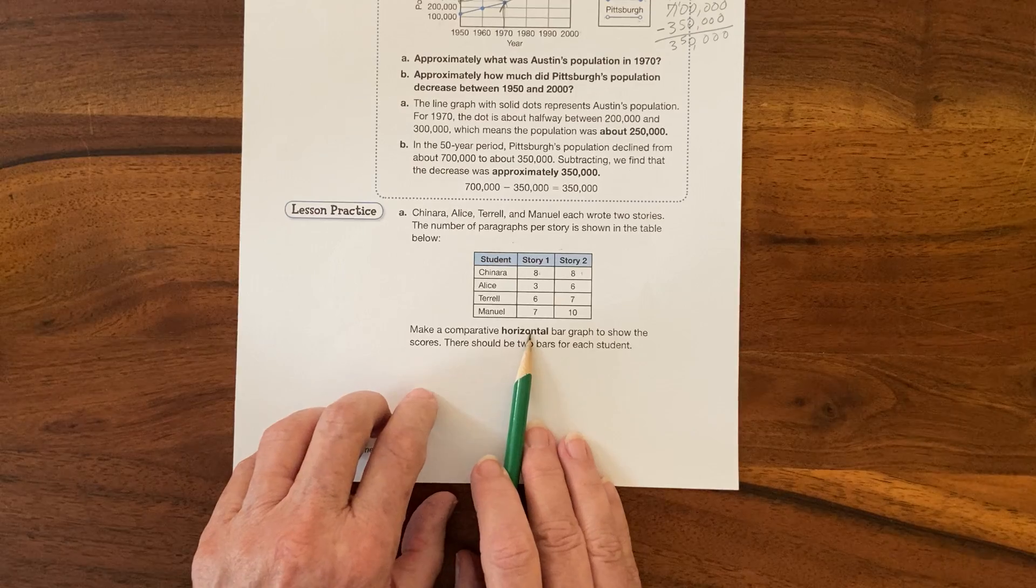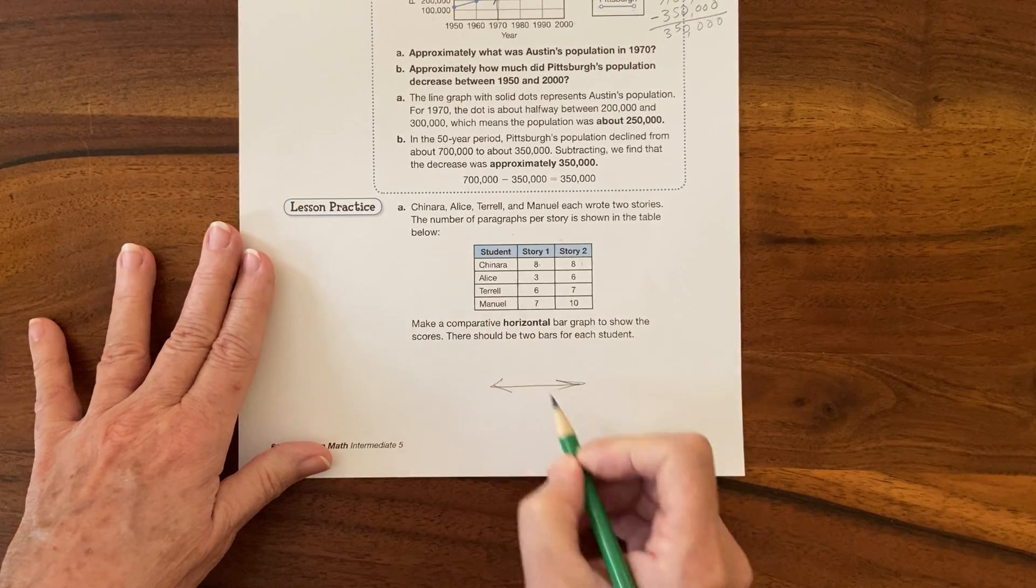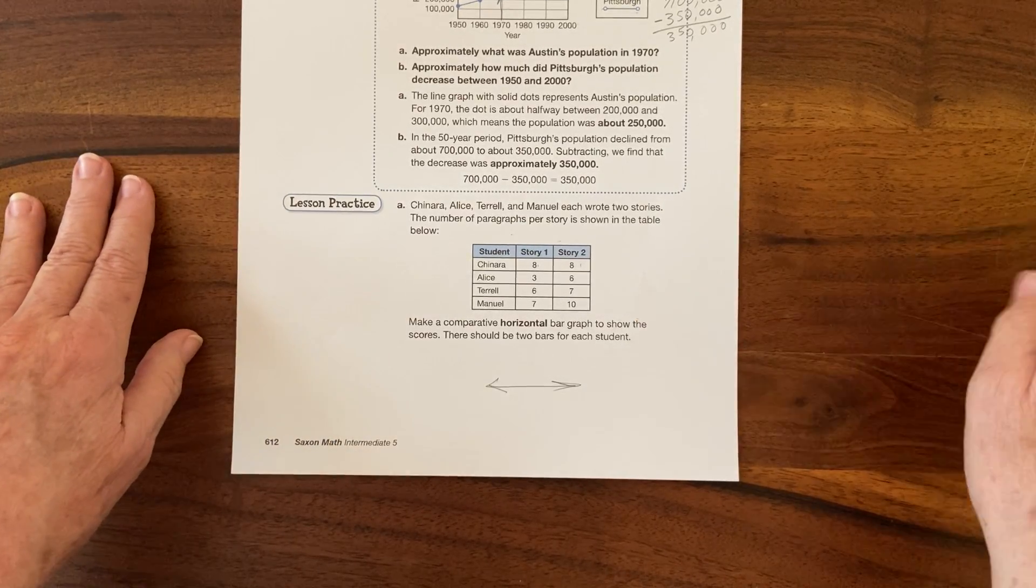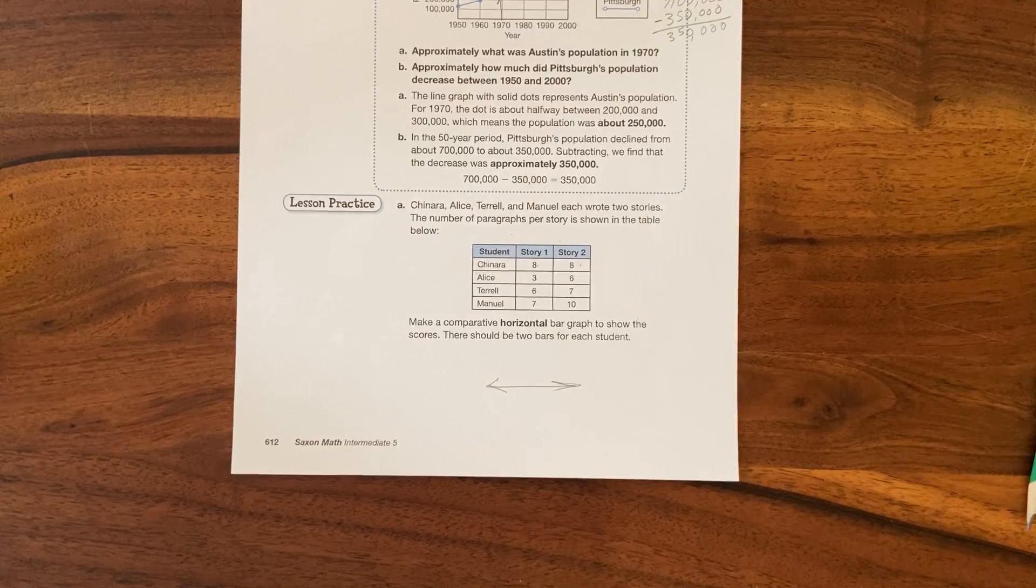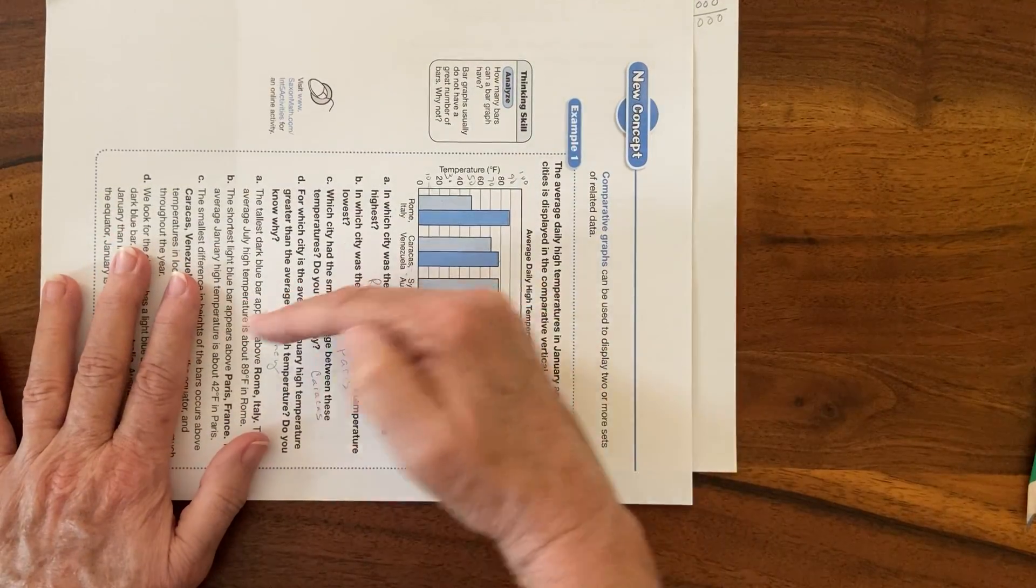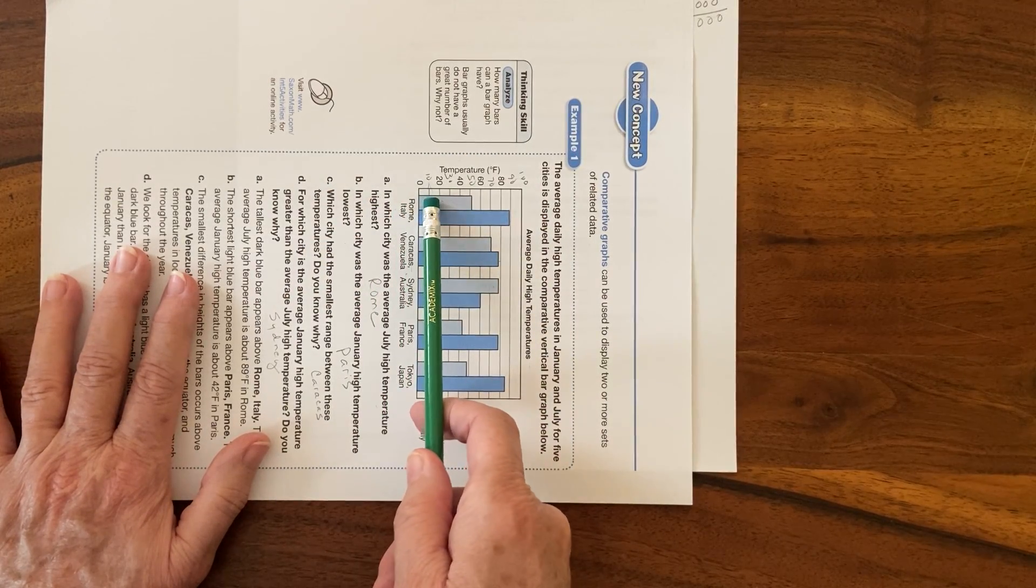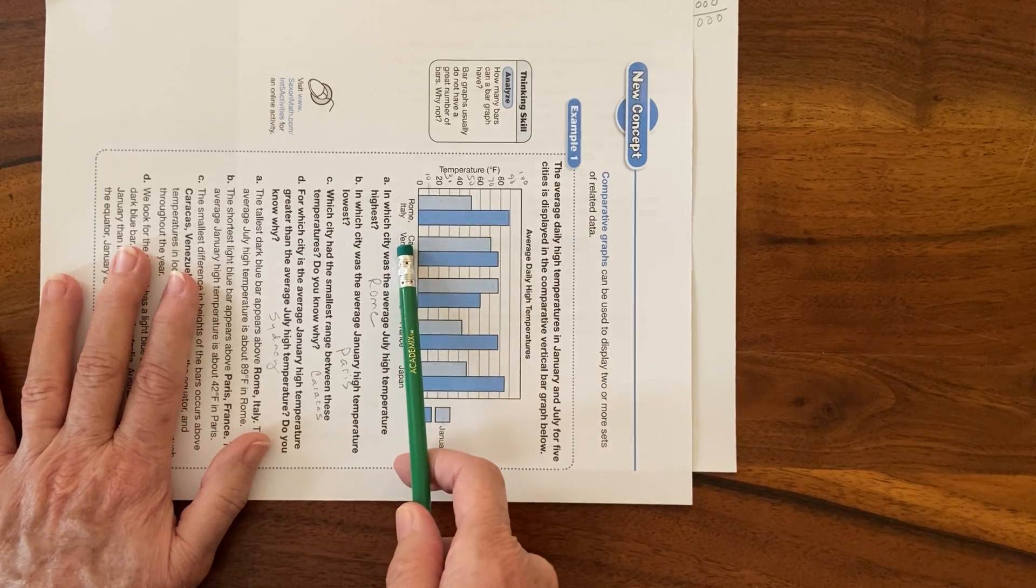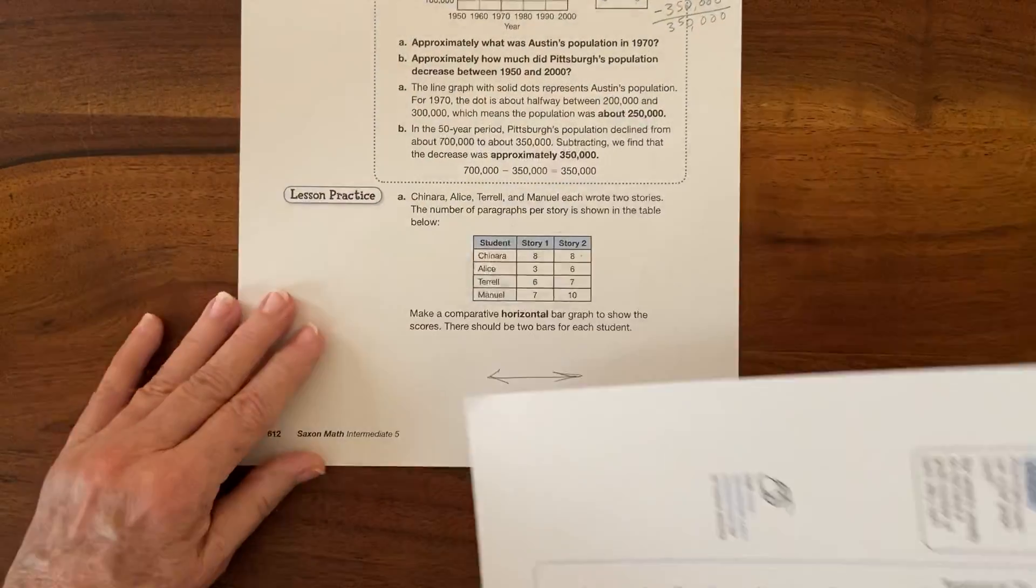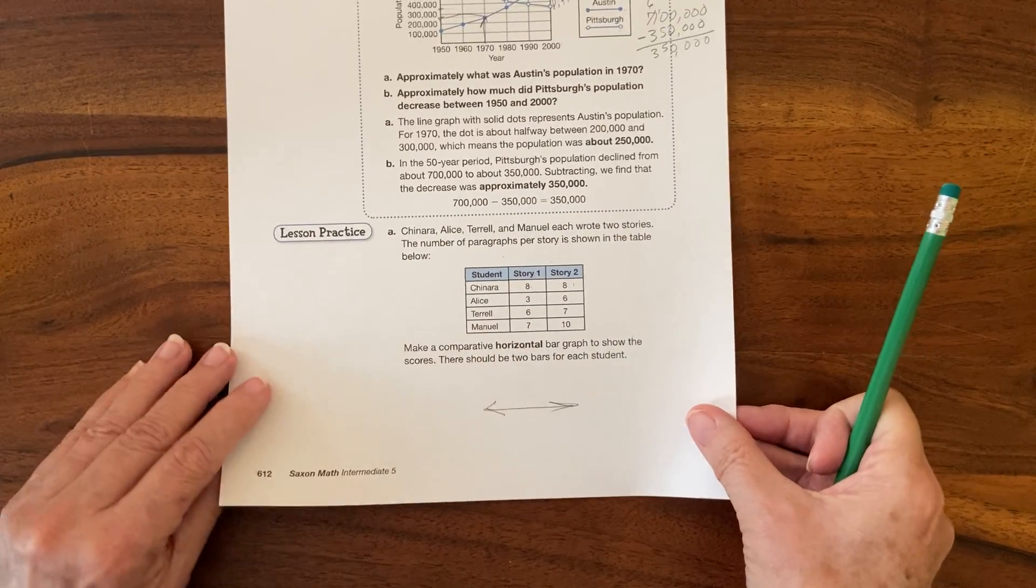They always tell you in the word problems so you have to make a comparative horizontal - which way is horizontal? This way, it's horizontal right, like the horizon - bar graph to show. So it's almost like we're gonna take this graph here but turn it this way. So horizontal bar graph would be like this. This might be the first kid, story one, story two, second kid, story one, story two, third kid, story one, story two. Whatever way works best for you.